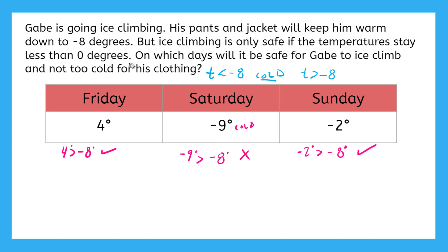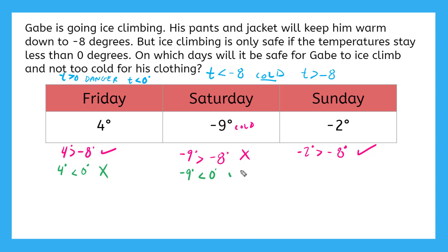But we have another requirement here. Ice climbing is only safe if the temperatures stay less than 0 degrees. So that is telling me that when T is greater than 0, danger. That means we need T to be less than 0 degrees. Let's check our weather forecast. Is 4 degrees less than 0 degrees? No, obviously not. How about negative 9 degrees — is it less than 0 degrees? Yep, that checks out. Negative numbers are less than 0. How about on Sunday? Is negative 2 less than 0 degrees? Yes — by the same logic, negative numbers are less than 0 degrees.